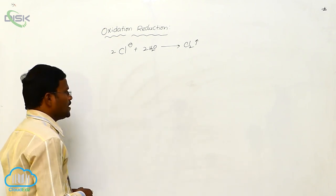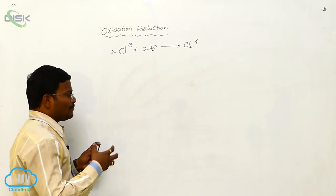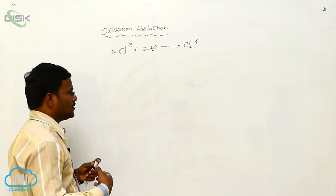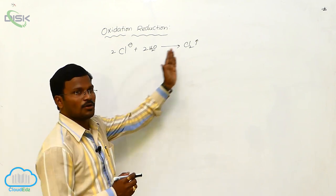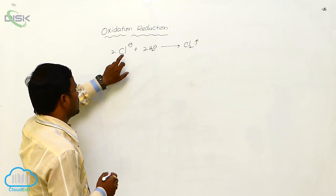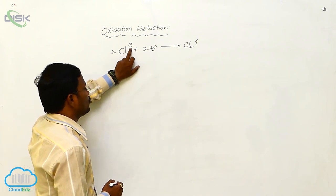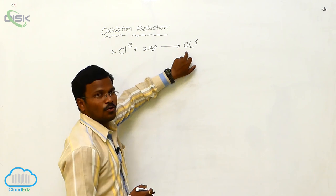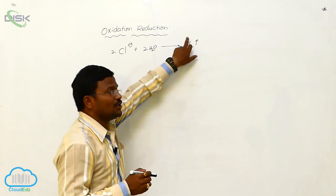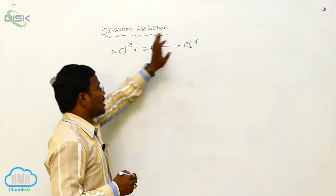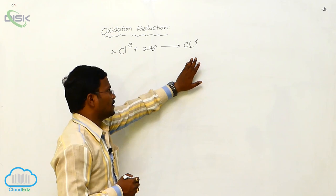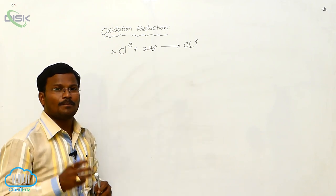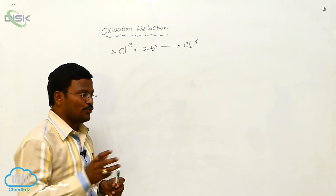Sometimes in chemistry, some elements are isolated or extracted through oxidation processes. Remember, the oxidation state of chlorine in brine is −1, whereas the oxidation state of chlorine in Cl₂ is 0. The oxidation state is increasing, which indicates an oxidation process during extraction.